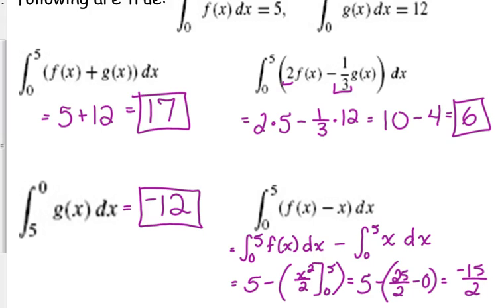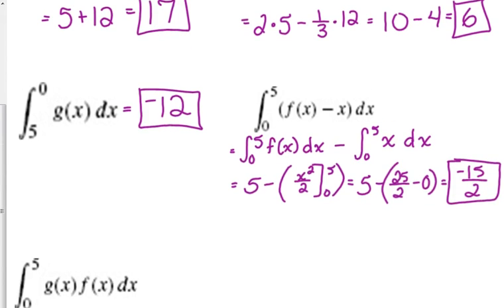So 5 minus 25 over 2 is negative 15 over 2. Yeah, 10 minus 25 over 2 is negative 15. So you can combine these rules with just regular integration that we already know.